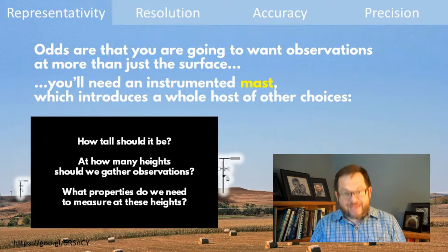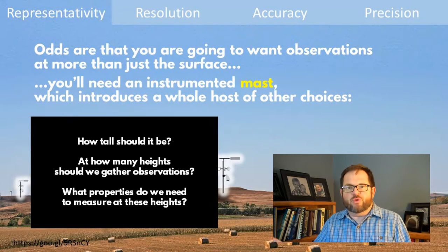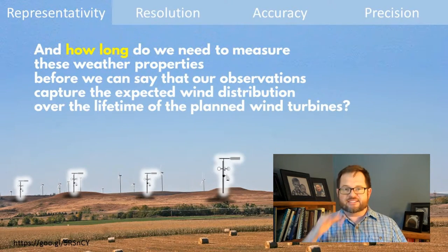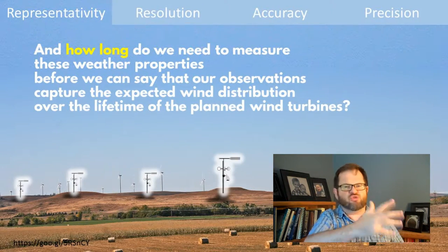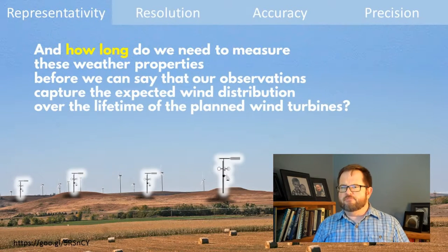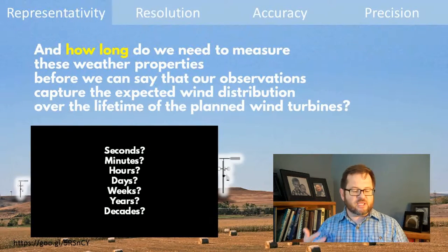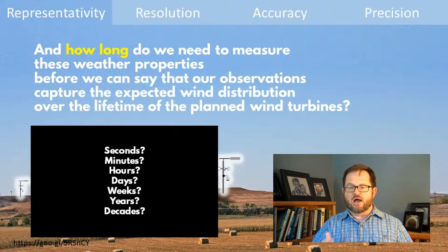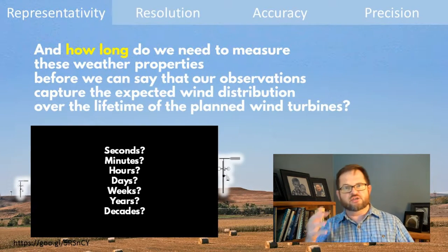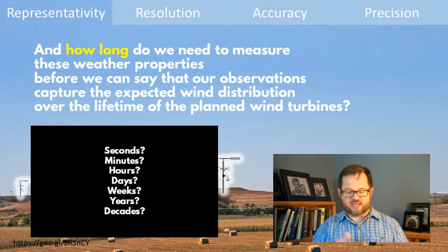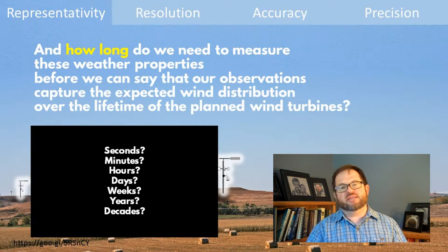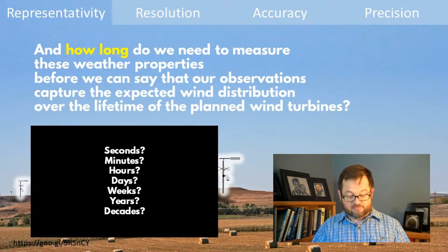During that whole research phase, you're not making any money — there's no wind farm, you're not producing any power. So how long are we willing to wait while gathering weather observations before we can make a decision and say this ridge line versus that one is the better place — we'll get 3% more electricity at this location? We need to capture the full range of expected winds. We all understand that seconds, minutes, hours, or even days of observations are clearly not going to be enough, but the longer you wait, the less time you're out there making money.